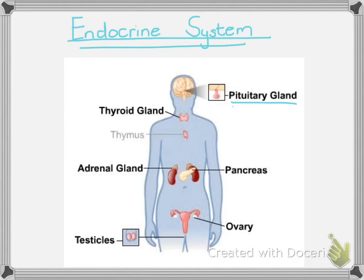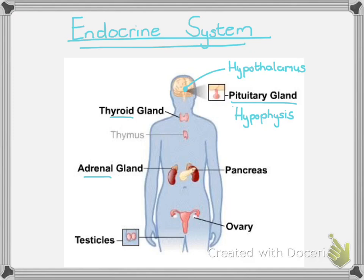The pituitary gland has another name and may also appear in your textbook as the hypophysis. You should know both names because in previous final exams, the examiners have asked a question using the word hypophysis, assuming that you know that is the pituitary gland. The hypothalamus sits just above the pituitary gland. We then have the thyroid, the adrenal gland closely associated with the kidneys, the pancreas — which we've covered in digestion and insulin — and the gonads, which are the testes and the ovaries, covered in human reproduction.